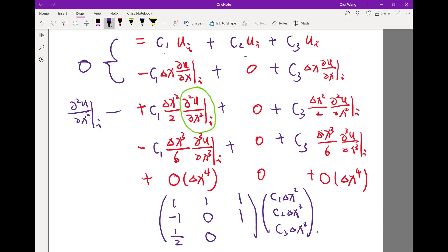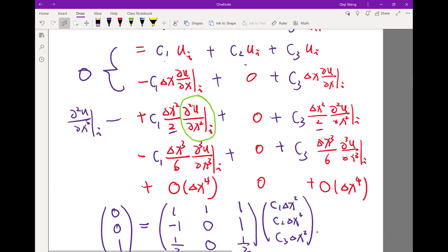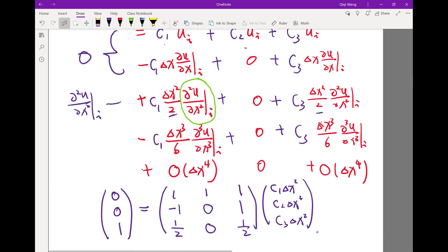And the third row is half, zero, and half, because of the half here. I already multiplied by delta x square. This should be equal to zero, zero, and one. Do you see the conversion from these three rows to the matrix system?